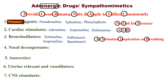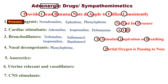Number four: Nasal decongestants. When the nose is congested, inhalation is difficult. Nasal decongestants are used when partial oxygen is passing to the nose. Remember 'Partial Oxygen Is Passing to Nose': P for Phenylephrine, O for Oxymetazoline, P for Pseudoephedrine, and N for Naphazoline.